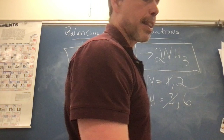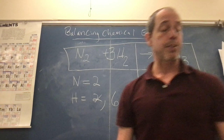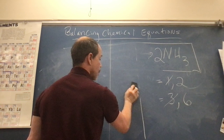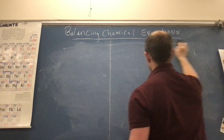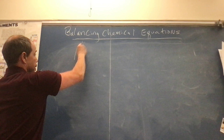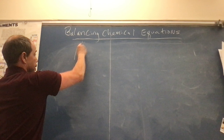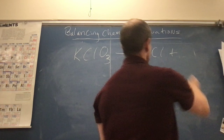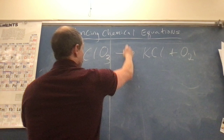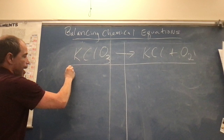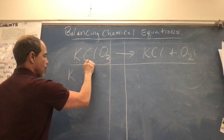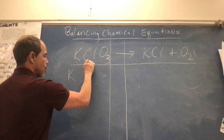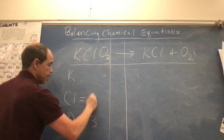The next problem: potassium chlorate yields potassium chloride plus oxygen — KClO3 yields KCl plus O2. These are more simple types of equations for balancing; they get much more complex but we'll stay simple for today. Create your tally chart: on the reactant side I have 1 K, 1 Cl, and 3 oxygens.